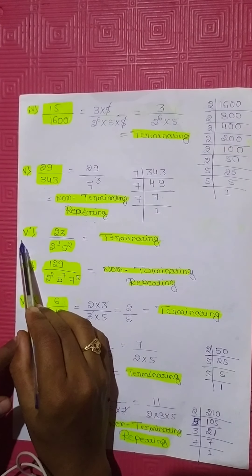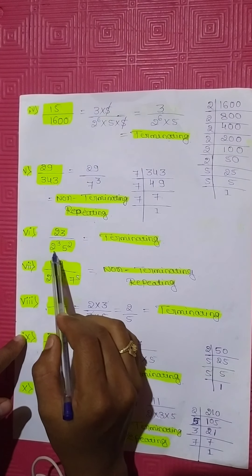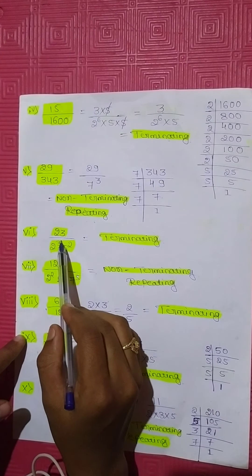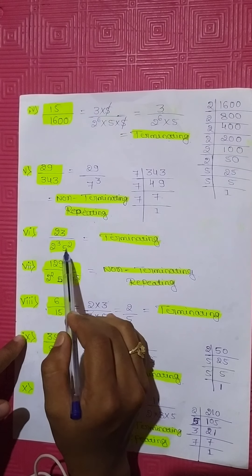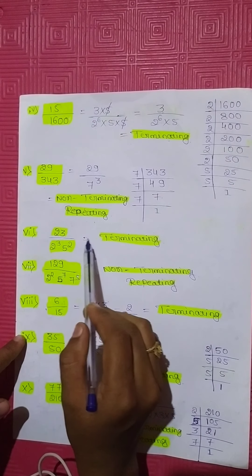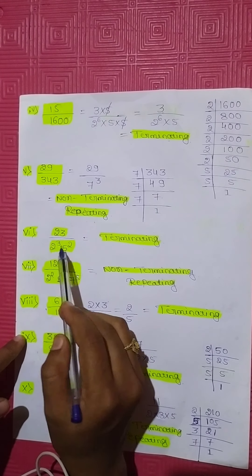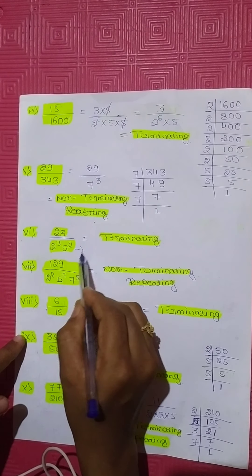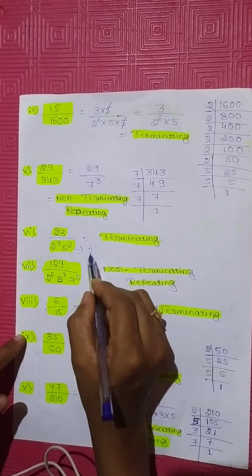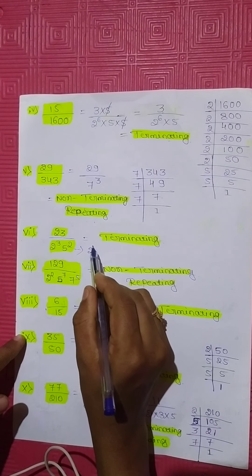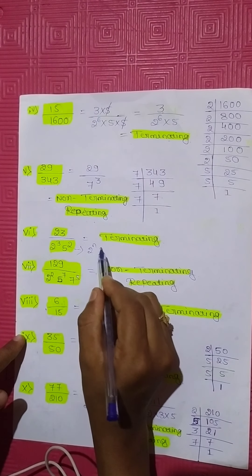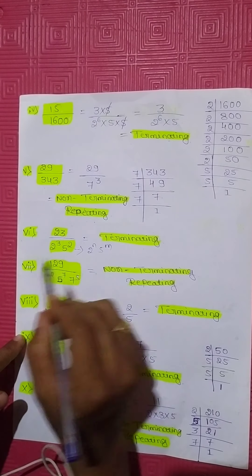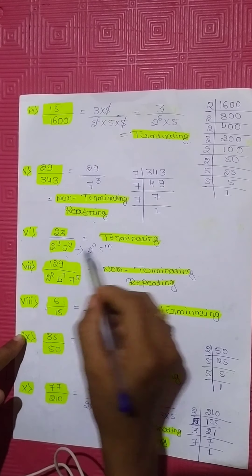Sixth question: 23 divided by 2 to the power of 3 into 5 to the power of 2. The denominator is directly given in 2 to the power of N and 5 to the power of M form, therefore this is a terminating decimal.